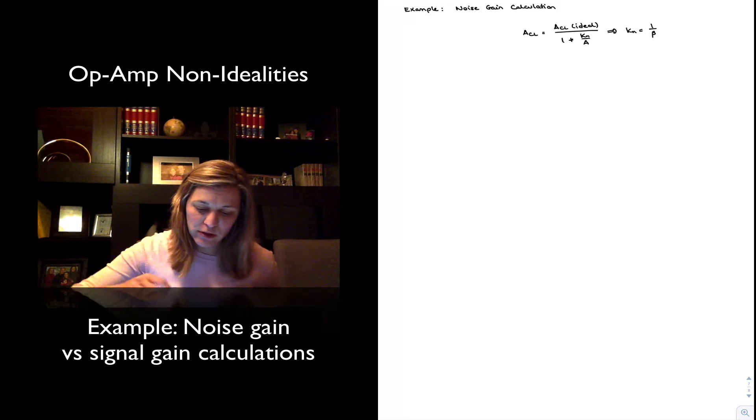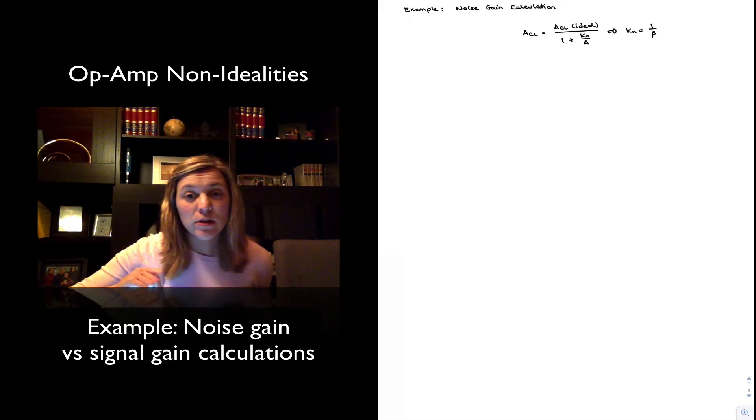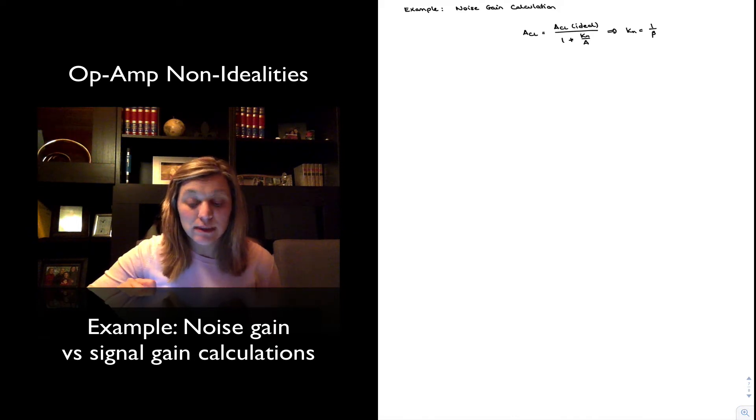First of all, just remember the equation that we had written in the previous video for the closed-loop gain of an amplifier and how it relates to the noise gain. The closed-loop gain ACL is equal to the ideal closed-loop gain divided by one plus the noise gain divided by the open-loop gain of the amplifier.